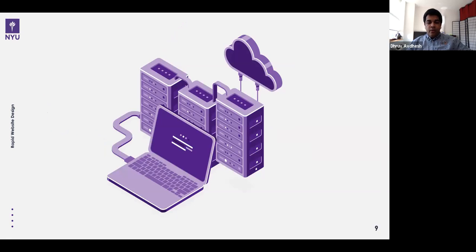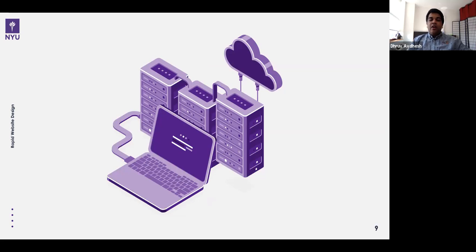When you enter a URL like engineering.nyu.edu in a web browser, your computer sends a request to the server. The server processes the request and sends data back. The server might have code written in different languages, but it's shown to you as a visual output as a web page. The data on the server is not a visual file — the browser interprets that code and shows you the visual output.